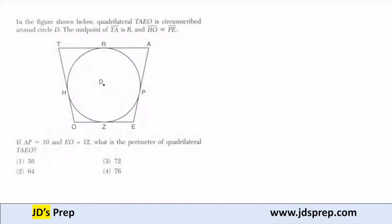The midpoint of TA is R. Let's pause there for a moment. Because the midpoint of TA is R, that point right there, then I know that TR is congruent to AR. So I know that these two sides are going to be the same.